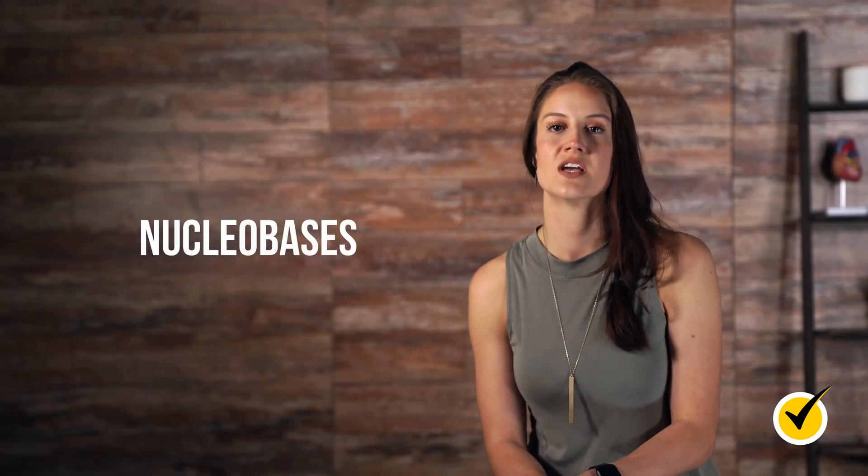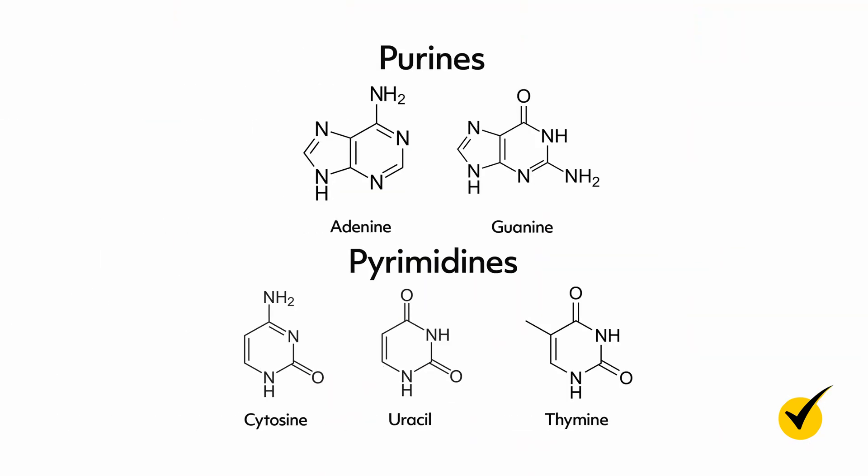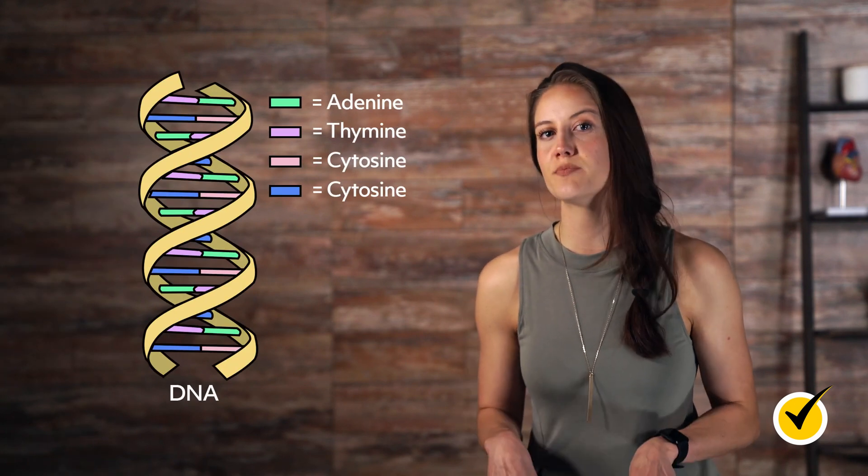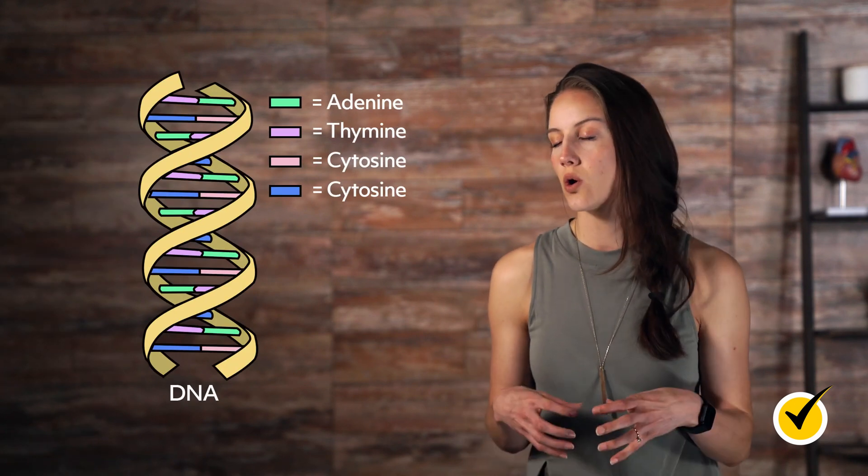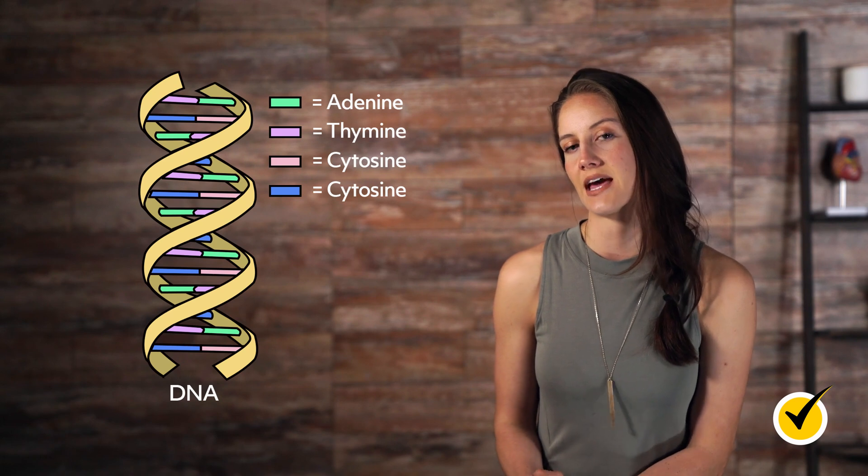In nucleic acids, the nitrogenous bases, also called nucleobases, are what pair up to form the base pairs. These pairs are formed between a purine and a pyrimidine. Pyrimidines are single carbon-nitrogen rings, while purines are pyrimidines fused to an imidazole ring to make a double ring. The nitrogenous bases seen here have hydrogen bonding between each other, which holds the nucleic acid strand together.